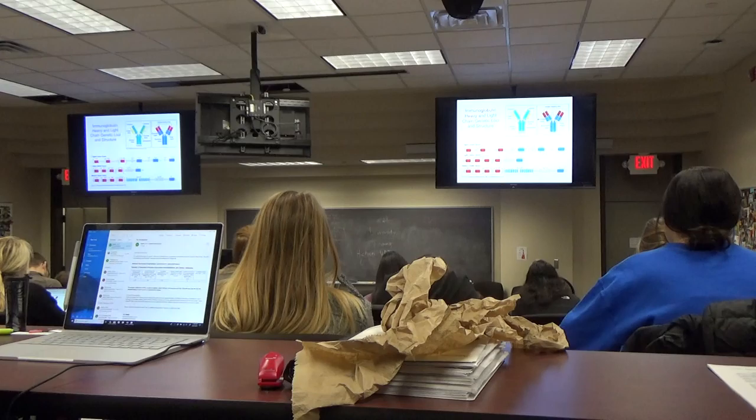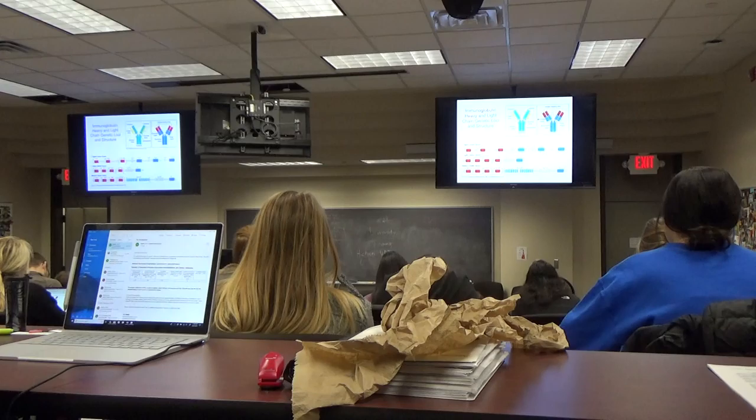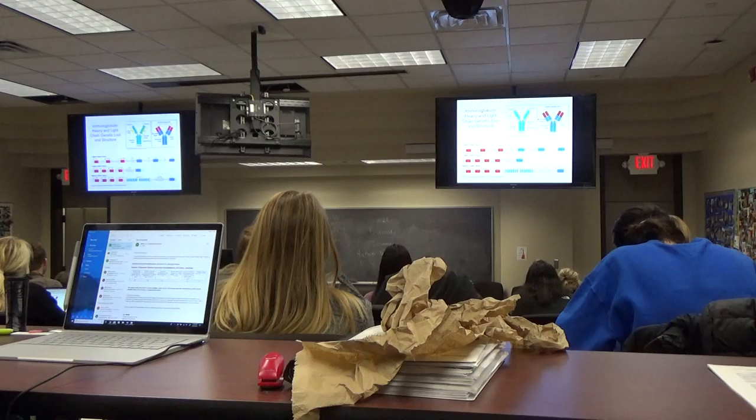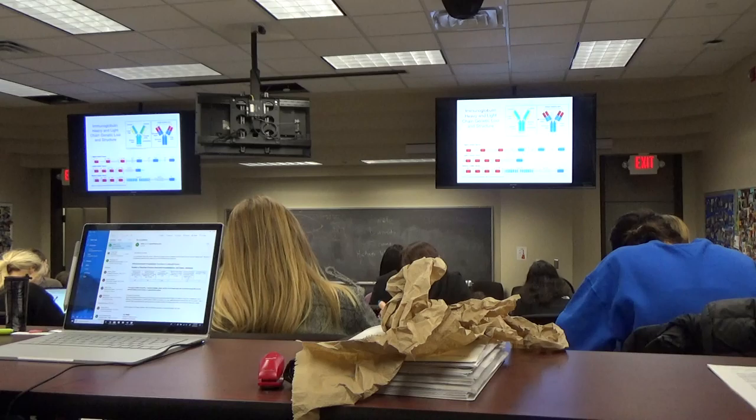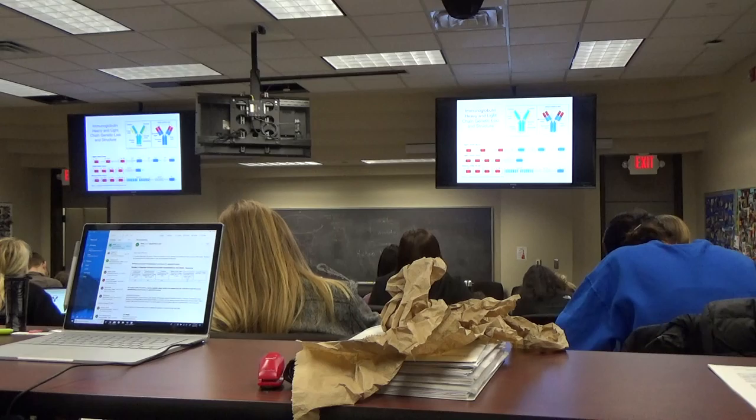The kappa light chain works a little differently. You have all of the J segments attached together — J kappa 1 through 5 — in one block, and you have one constant segment for that. But you have up to 38 V gene segments upstream.